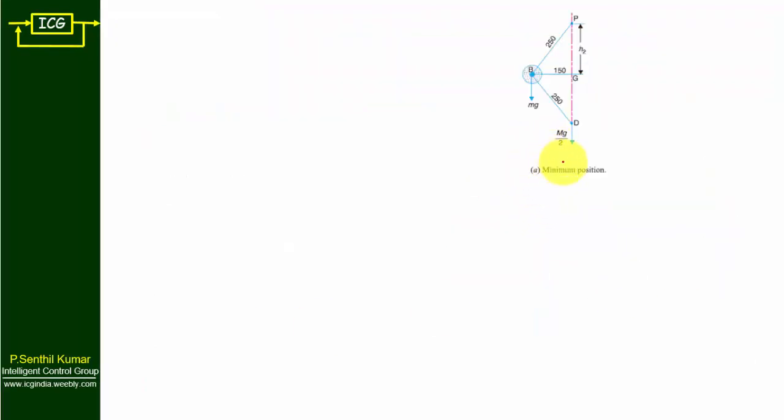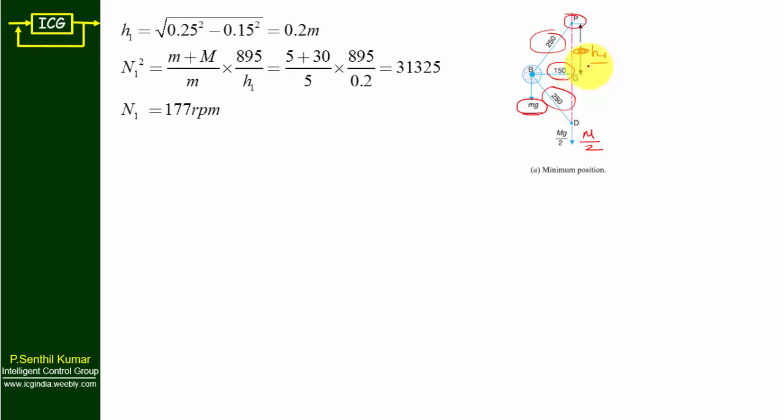For free body diagram 1 (minimum position h1): draw a vertical line, then add upper and lower arms. Both arms are 250 mm, pivoted on the axis of rotation. The radius for minimum position is 150 mm. The ball weight is mg (small m), and the sleeve contributes Mg/2 on each side (capital M divided by 2 since we draw only one side). We need to find h1 using the Pythagorean theorem.